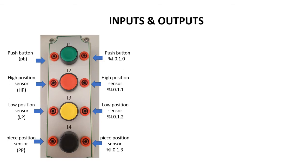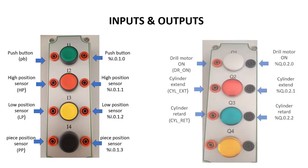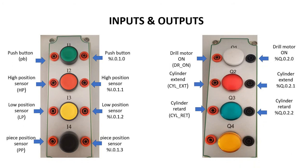The address given to the inputs is always denoted as %I. The input module is placed in the 0th rack, slot 1. Pin 0 is connected to PB, pin 1 to the high position sensor, pin 2 to the low position sensor, and pin 3 to the work piece position sensor. Similarly, the outputs are drill motor on, cylinder extend, and cylinder retard, denoted as %Q, also in the 0th rack but in the second slot — the output module. Pin 0 is drill motor on, pin 1 is cylinder extend, and pin 2 is cylinder retard, named as Q0, Q1, Q2 in order.